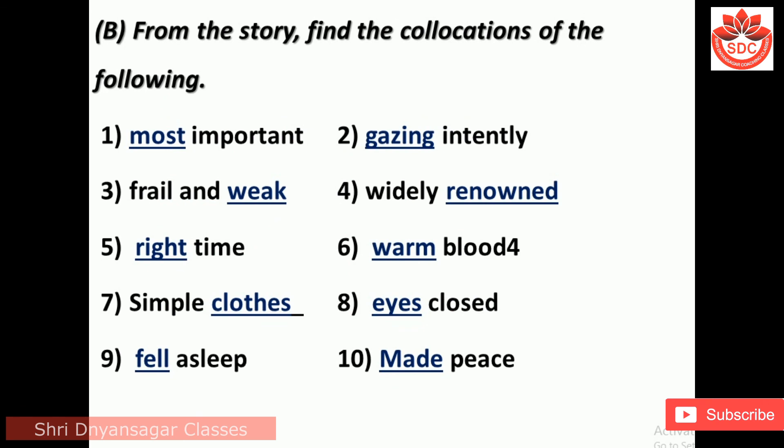10B: From the story, find a collocation of the following words. Important — most important. Intently — intently gazing. Frail — frail and weak. Widely — widely renowned. Time — right time. Warm — warm blood. Simple — simple clothes. Eyes — eyes closed. Fell — fell asleep. Made — made peace.